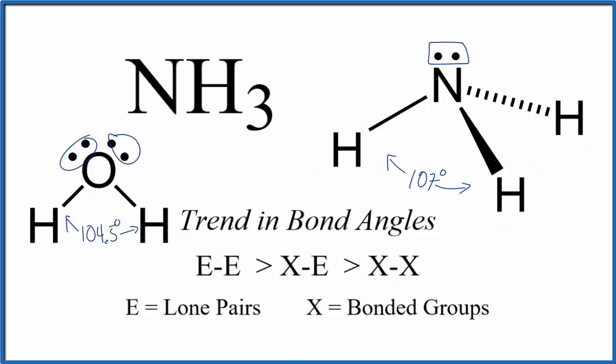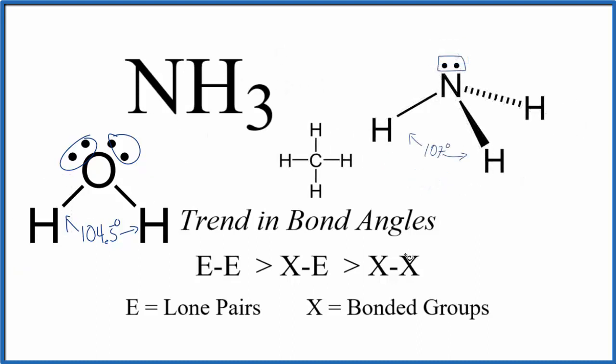If we had a molecule like methane, where we don't have any lone pairs, it's all just hydrogen atoms. Here we have just hydrogen atoms. So this bond angle right here, 109.5 degrees. So the largest bond angle of these three different molecules here.